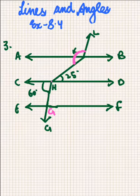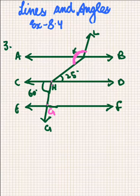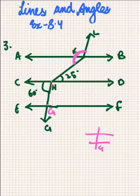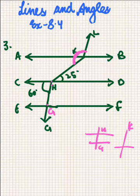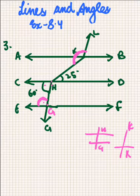First of all, we will see here that line GH. If we draw a rough diagram, GH is parallel to KL. These are co-interior angles — this angle and this angle. So it will give 120 degrees.